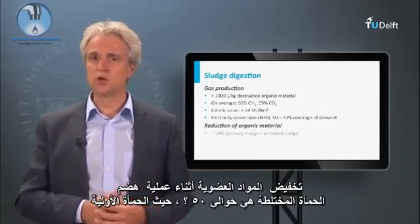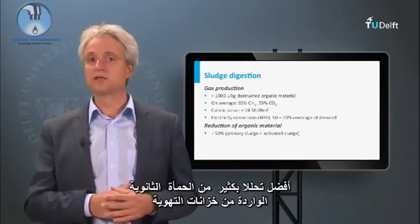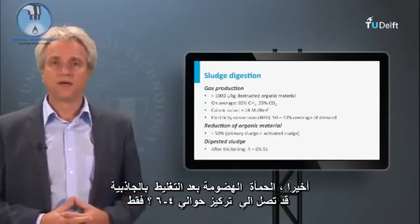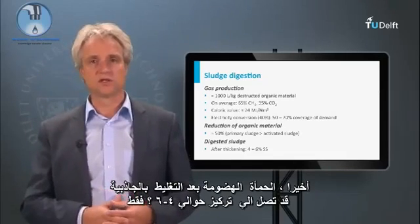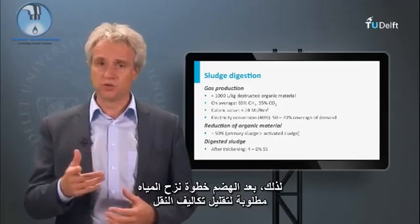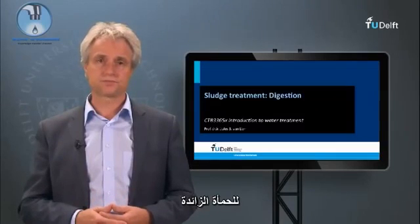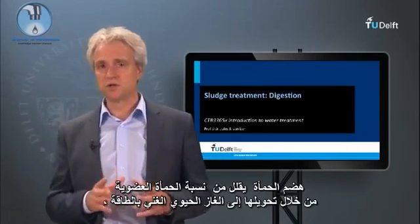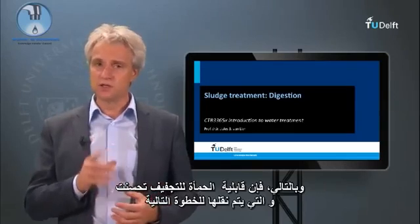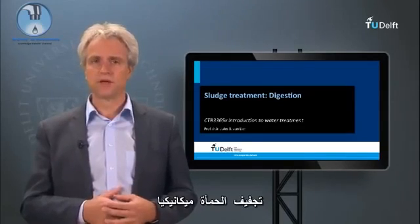The reduction of organic matter during digestion of mixed sludge is about 50%, with primary sludge being much better degraded than secondary sludge from the aeration tanks. Digested sludge after gravity thickening may reach a concentration of only 4–6%, so a dewatering step is required after digestion to minimize transport costs. Sludge digestion reduces the sludge organic fraction by converting it into energy-rich biogas, which consequently improves sludge dewaterability — an important factor for the next step of mechanical sludge dewatering.